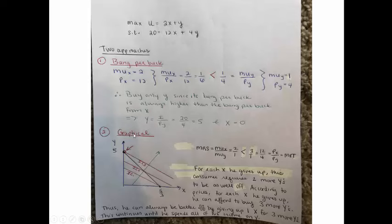Another way that complements the bang-per-buck approach to find the answer is a graphical approach. In this example, the MRS is 2. In comparison in this example, the MRT is a larger 3. What that means is that at every point, the indifference curves are flatter than the budget line. I'll say that again. Since the MRS is smaller than the MRT, the indifference curves are flatter than the budget line.